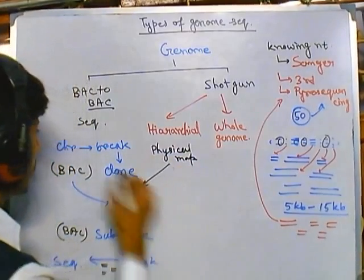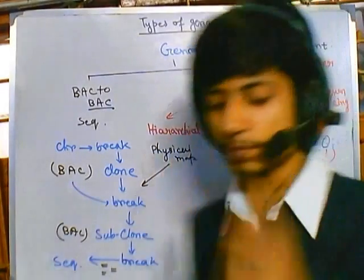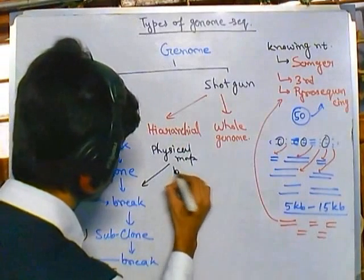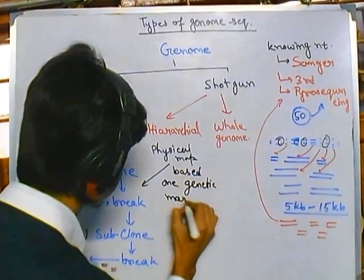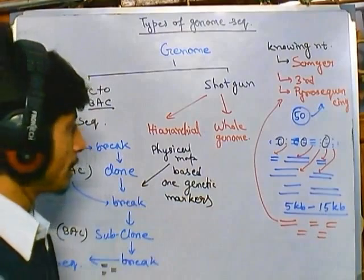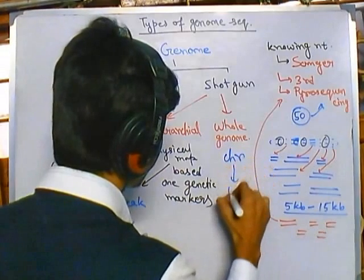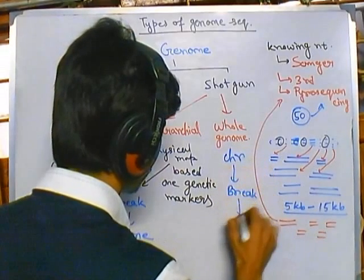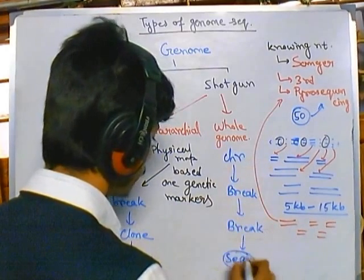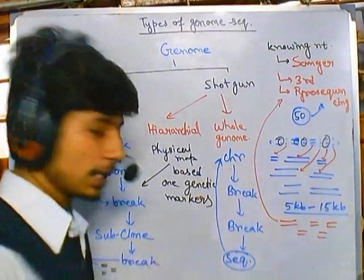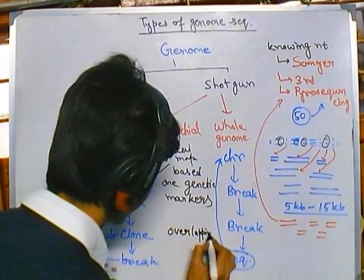After getting the physical map, we do the same thing as in BAC-to-BAC sequencing — break them, clone them, break them, clone them — but we first have a physical map based on genetic markers. In whole genome sequencing, it is completely random: we take the total chromosome, break it, break it again, sequence it, and then go back using overlapping segments to reconstruct the original sequence.